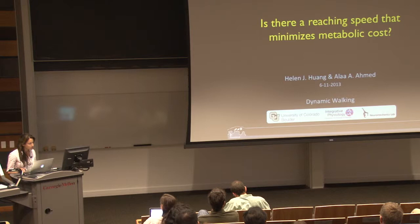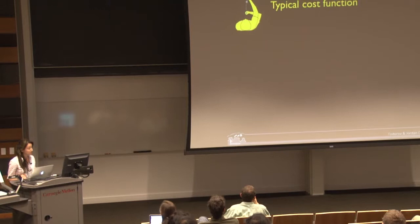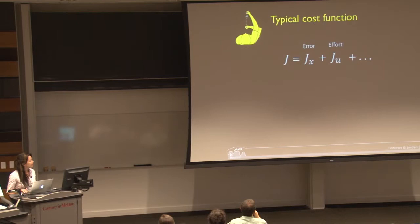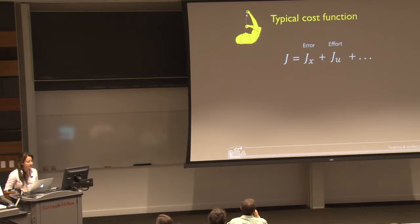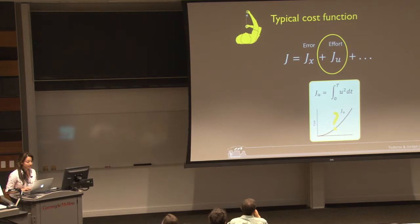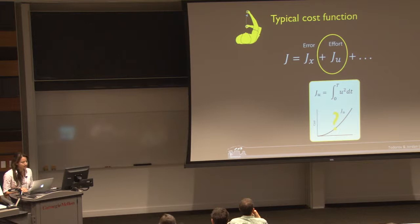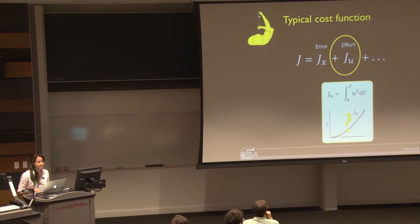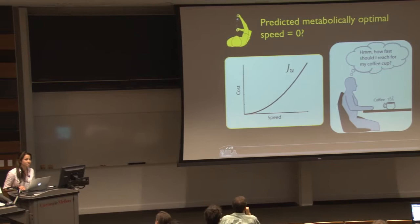The term for the effort cost is represented in arm reaching as the integral of the effort signal U squared with respect to time, where the effort signal can be anything from a neural command signal to muscle activity, to force, or to the derivative of force. This term has not been experimentally validated in arm reaching — it's simply mathematically convenient. But can this effort term alone explain how fast you should reach? Will it predict a metabolically optimal reaching speed? The short answer is no — according to this term, the model would predict the metabolically optimal speed is zero, meaning to minimize effort, you should reach really, really slowly.